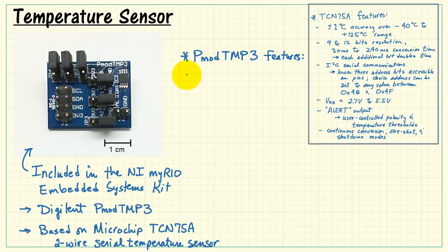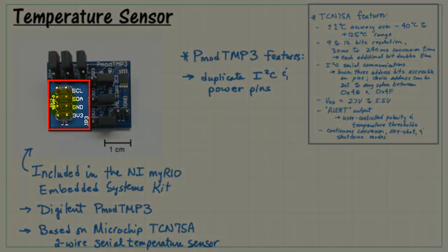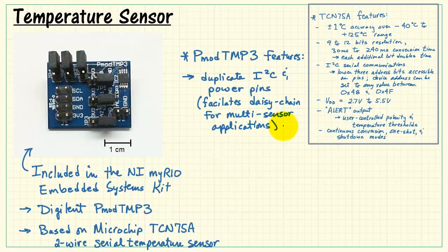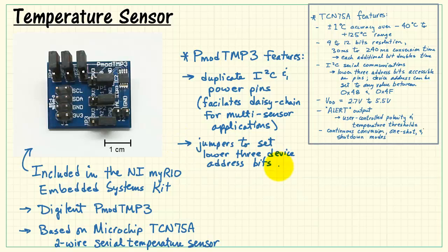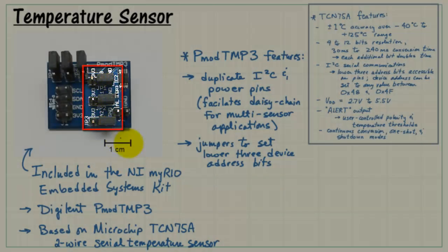Now let's look at the PMOD TMP3 board features. It has duplicate I2C and power pins located right here. Every pair of pins is the same signal. This facilitates daisy chaining for multi-sensor applications. You have some jumpers to set the lower 3 device address bits. Those are located right here.